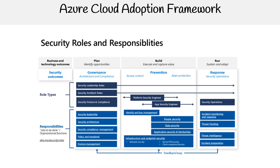Now let's take a look at the security roles and responsibilities of the Azure Cloud Adoption Framework. Business and technology outcomes cover the goals and results expected from security functions. Security outcomes include the results an organization aims for, including governance, prevention, and response.